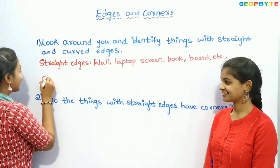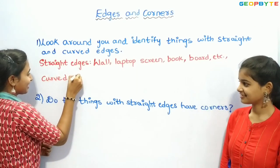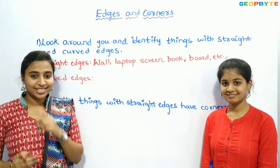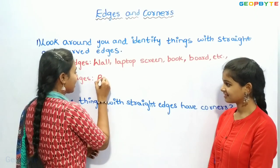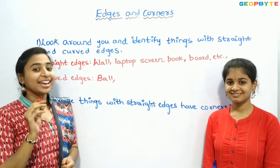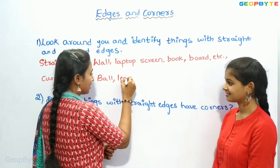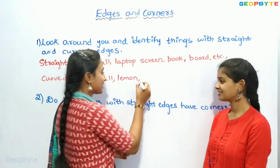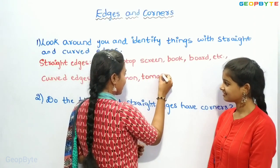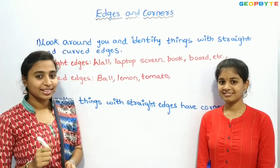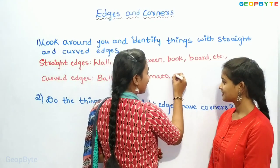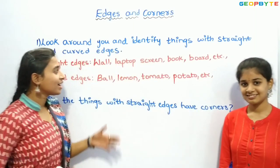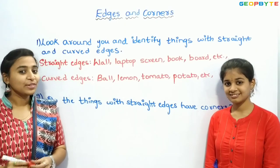Now let us see things with curved edges. Things with curved edges: ball, lemon, tomato, and potato. These are the general things which we observe around us.